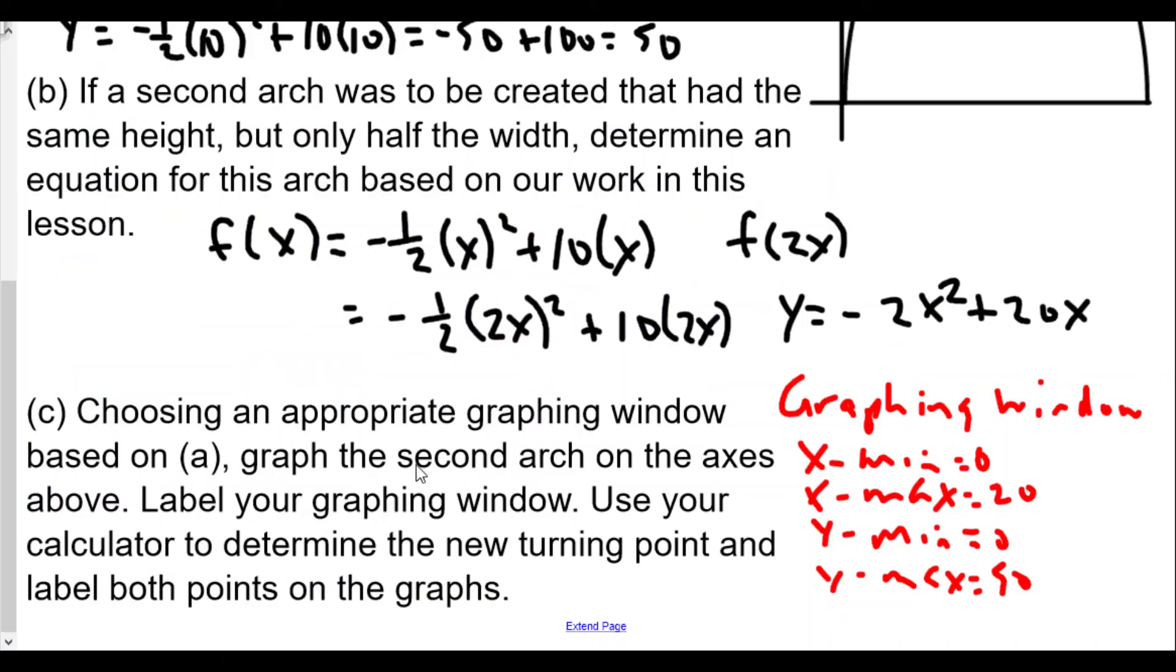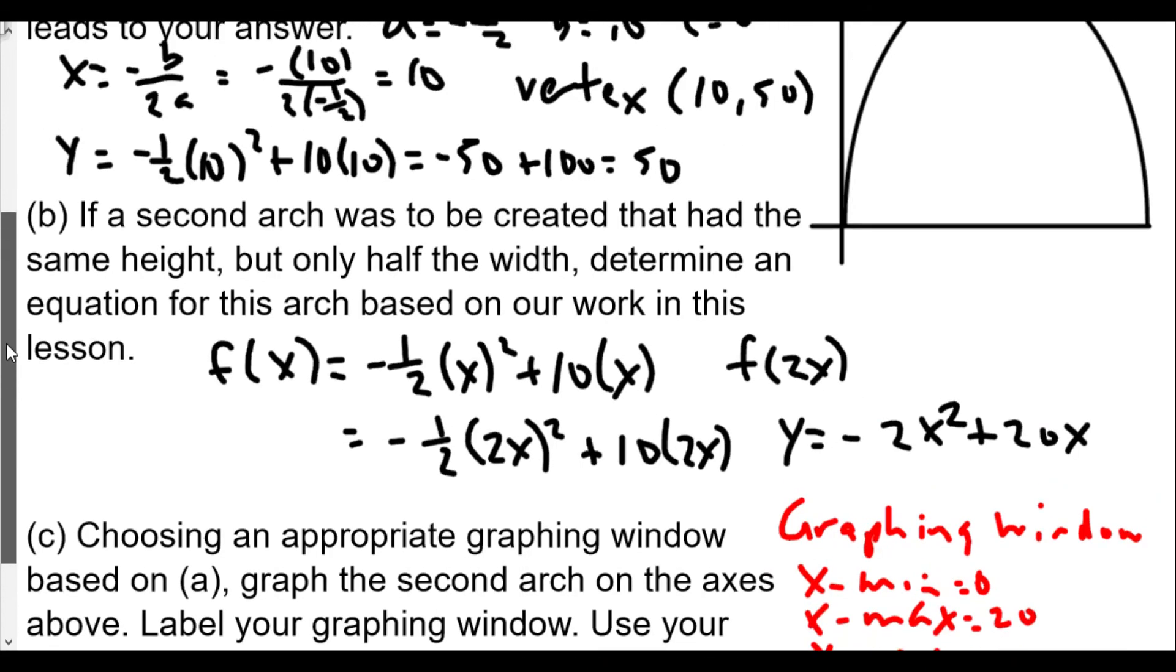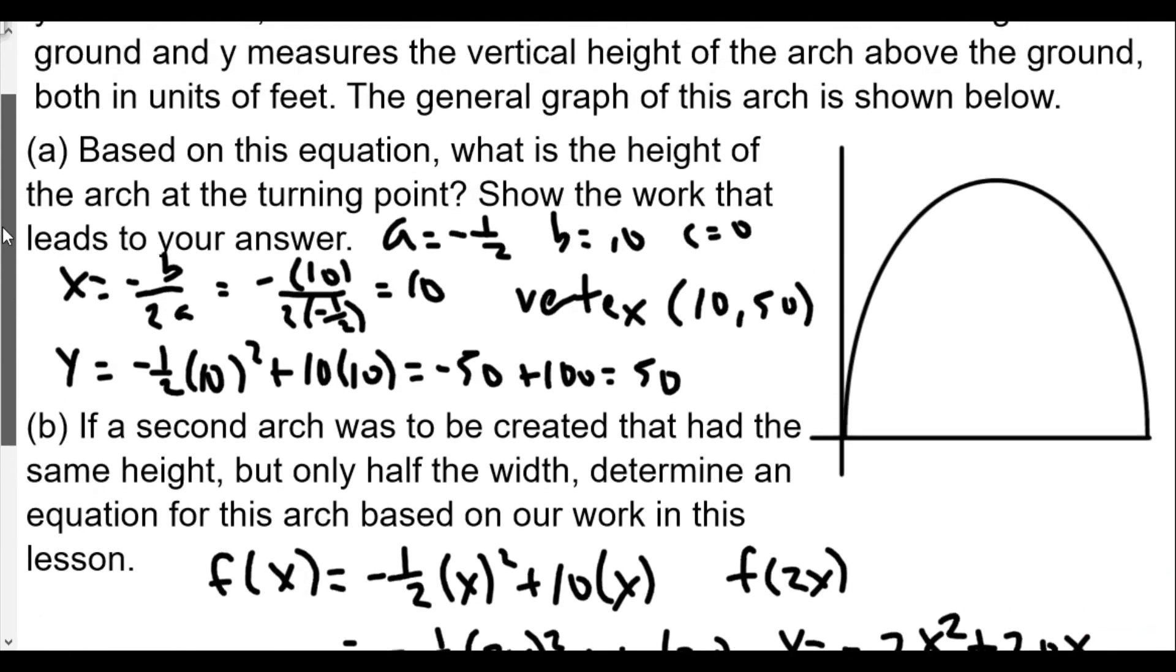So back to this point here. Okay. Use a calculator to determine new point and label the points on the graph. Okay. So here we go. Alright. We're going to kind of sketch a graph here. What would the graph look like? This new one. So this would be 10. This is 20. This highest point here is 50. Okay. And so now the other graph that we found, we'll go kind of like this, the first vertex here we found to be at 10, 50. And the second vertex we found was at 5, 50. Okay. And there you go.